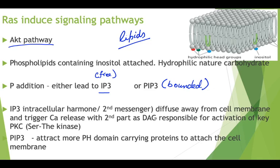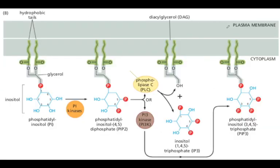IP3 and diacylglycerol are responsible for the activation of key protein kinase C. PIP3 attracts more pleckstrin homology (PH) domain-carrying elements to attach to the cell membrane. Looking at the plasma membrane phospholipid bilayer: the two fatty acids bind through glycerol, which has a phosphodiester bond binding to inositol — this whole structure is labeled as phosphatidylinositol (PI).